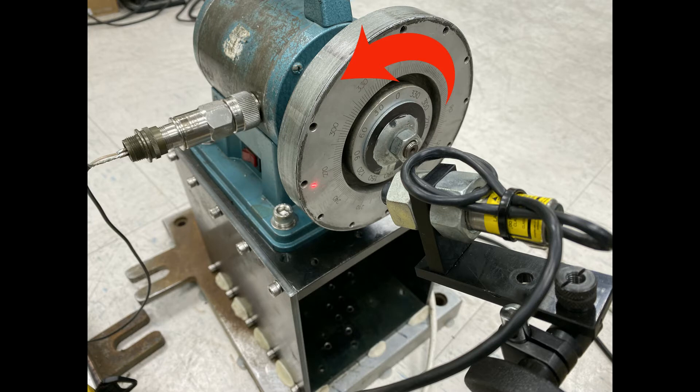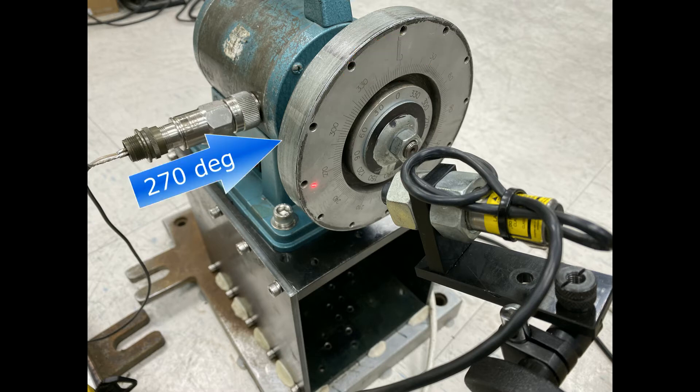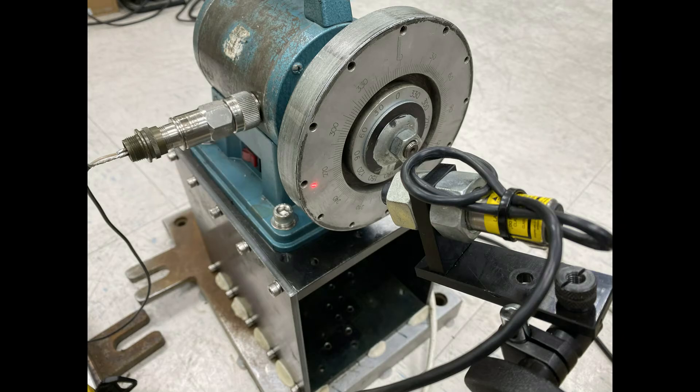This bench grinder rotates in the counterclockwise direction, and both the vibration sensor and the tachymeter are installed at the 270 degree angle.